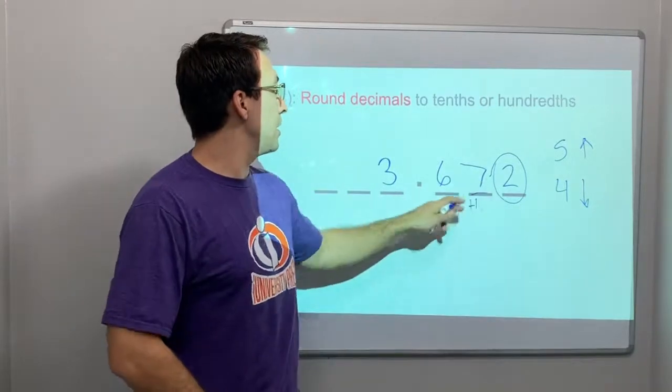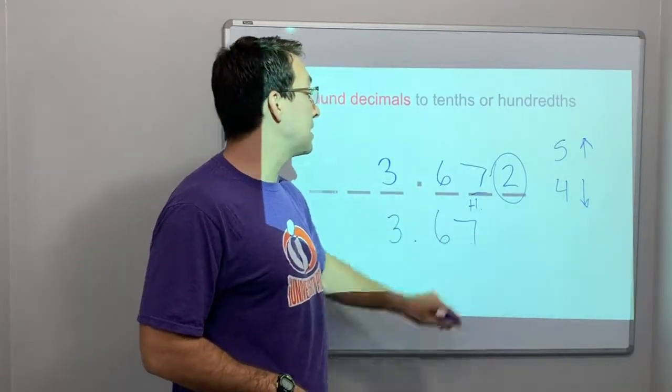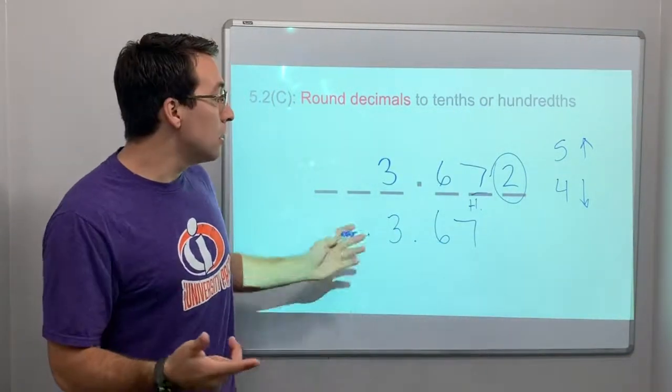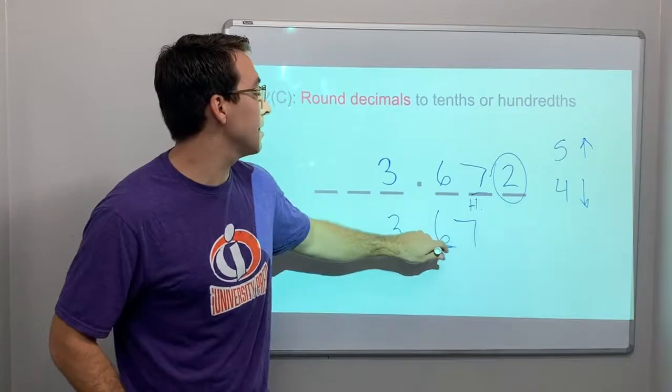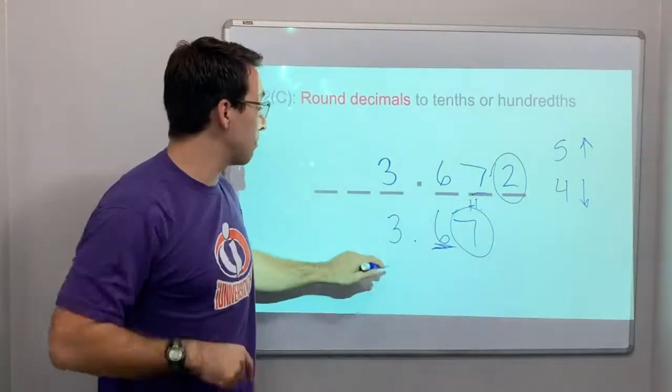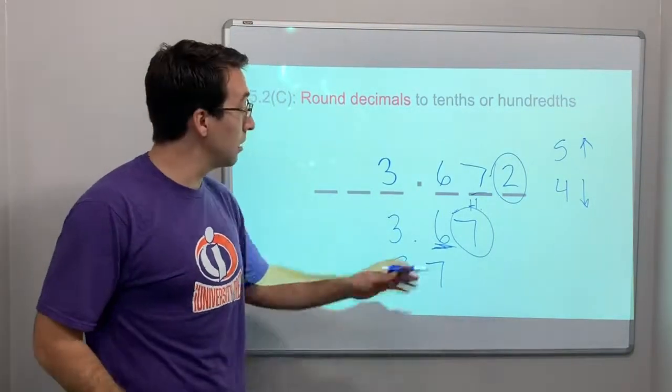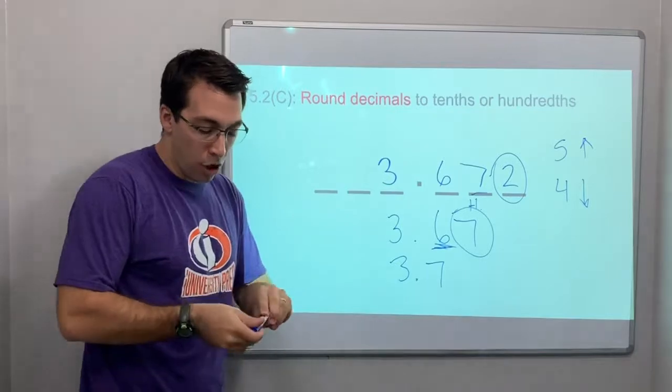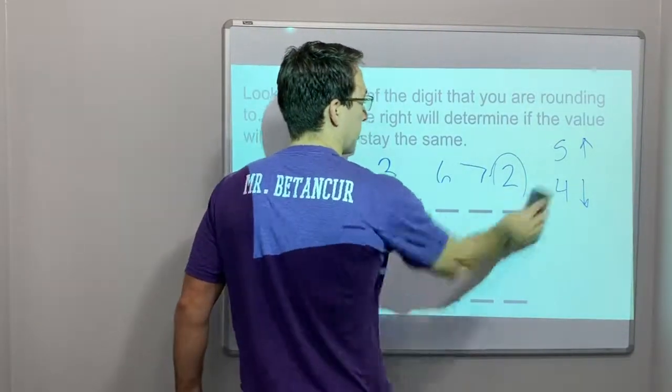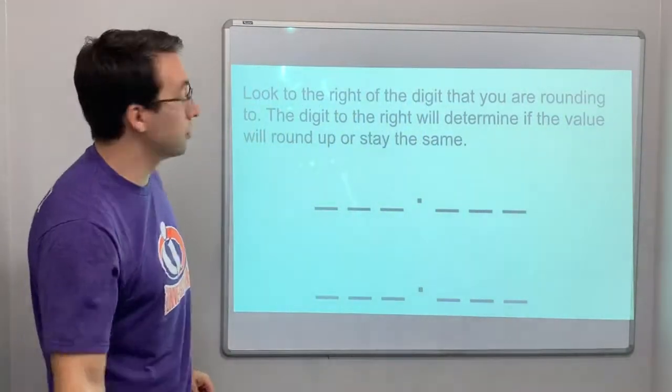So if we're going to round it to the nearest hundredths place, that would be 3 and 67 hundredths, because the 2 stays the same. Now, let's look if we're going to round it to the tenths place. We need to look at the 7. Ooh, 7 goes up, 3.7 tenths. So that's how we're going to round. The whole 5.2C is all about rounding decimals to the tenths and to the hundredths place.